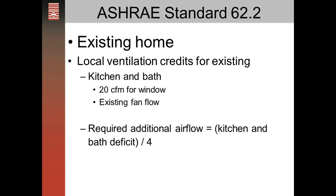To figure the additional airflow required continuously, you take the deficit from the kitchen or bath and divide that by four. In our example, a 60 CFM kitchen fan plus an operable window equals 80 CFM, leaving a 20 CFM deficit. For the bath, 30 CFM flow plus an operable window equals 50 CFM, which is sufficient. So we just have the 20 CFM kitchen deficit, divided by four, giving us 5 additional CFM continuous to add to our ventilation rate.